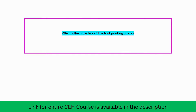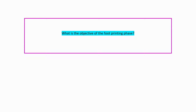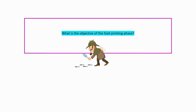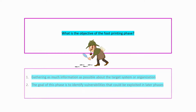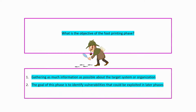Next question: what is the objective of the footprinting phase? Your answer should be: gathering as much information as possible about the target system or the organization. The objective of this phase is to identify vulnerabilities that could be exploited in later stages.